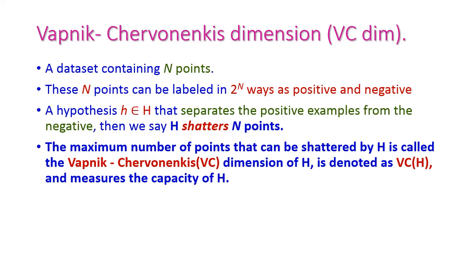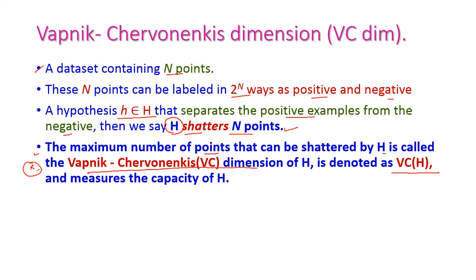Now let us see the summary of VC dimension. A dataset which contains n data points has 2 power n possible positive and negative label combinations. A hypothesis H belonging to the hypothesis class H that separates the positive samples from the negative samples is said to shatter n points. The maximum number of points that can be shattered by H is called the VC dimension, denoted by VC(H), which measures the capacity of H.